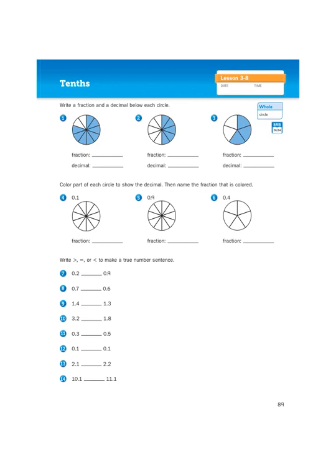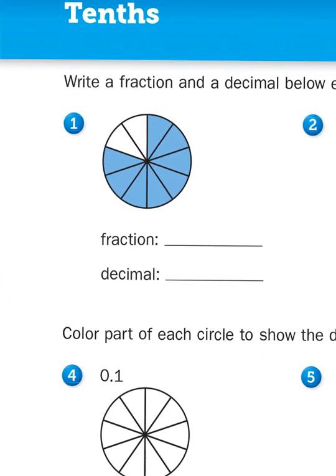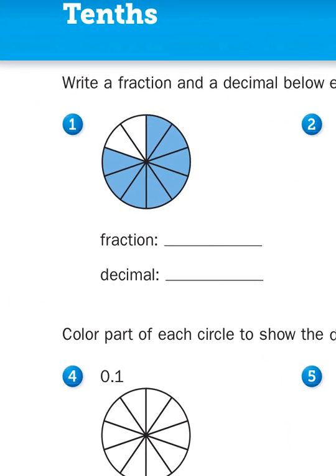So let's go ahead and get started. In the first row of problems, you see a fraction circle, and parts of the circle are shaded in to represent a fraction. So if you look at number 1, you'll see that there are 10 parts total, and 8 of the 10 parts are shaded in. So as a fraction, I would write that as 8 over 10, 8 tenths.